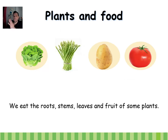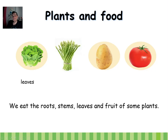More uses of plants for food: we eat the roots, the stems, the leaves, and the fruits of some plants. For example, lettuce — we eat the leaves. Celery — we eat the stem. Potato — we eat the roots. And tomato — we eat the fruit.